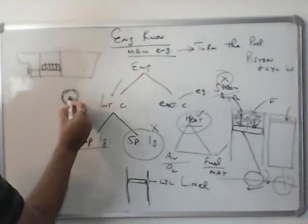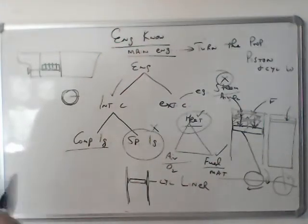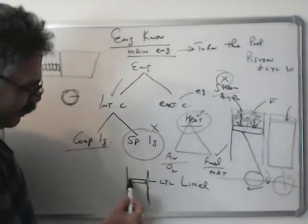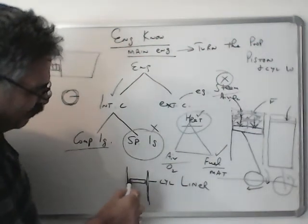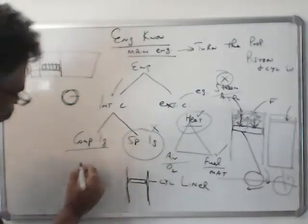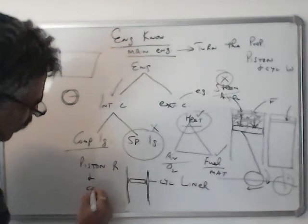So diameter of piston rings is slightly more than the piston, maybe one millimeter or half millimeter. So now you see here that there is no friction between piston and cylinder liner. The only friction is between piston rings and cylinder liner.